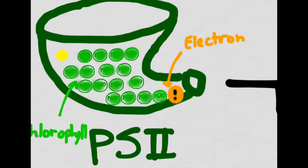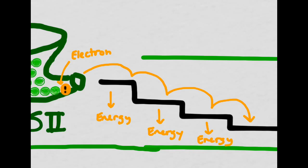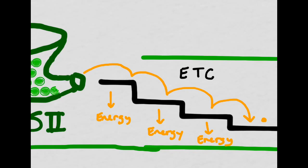Now this electron has more energy than it normally has. The electron now has so much energy that it will bounce down through a series of chemical reactions, which we call the electron transport chain. During every step in the electron transport chain, energy is lost from the electron. The electron has now reached the end of the electron transport chain, and is now a low-energy electron once again.